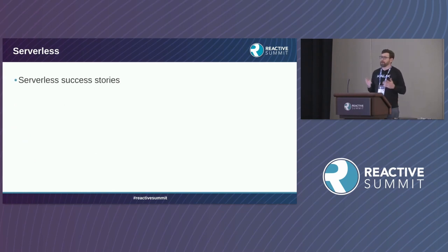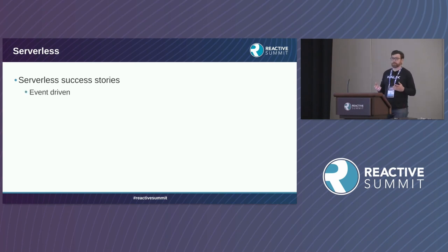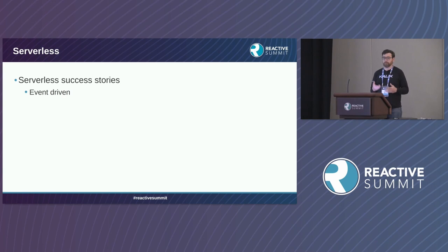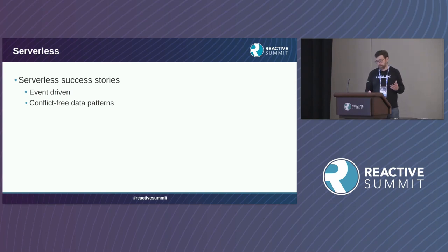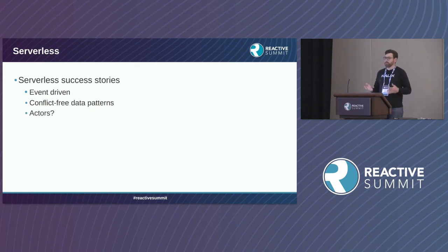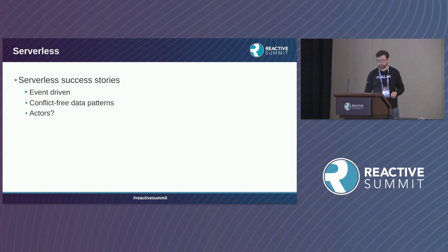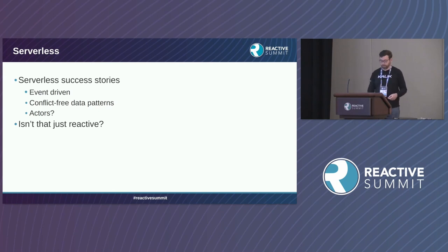At the same time, people started publishing success stories about how they successfully used serverless. What you saw was they talked about being event-driven — responding to events and publishing events rather than having big chains of lambda calls. They would talk about being able to update state independently without having to coordinate. You even started to hear about things that sounded a bit more like actors, like durable functions. We saw this almost reinventing of reactive that people had to do in order to use serverless effectively and successfully.